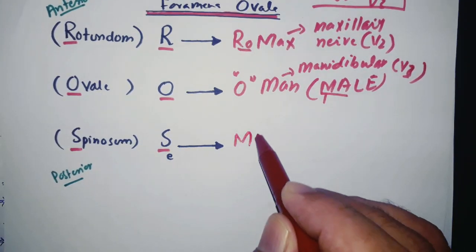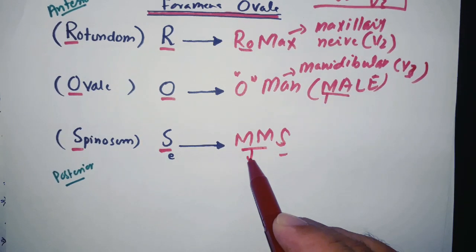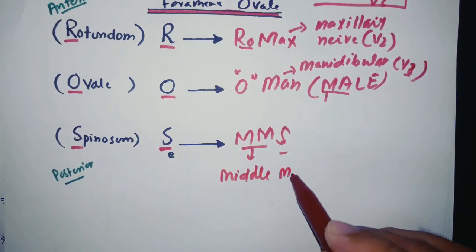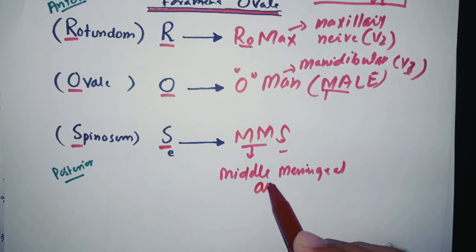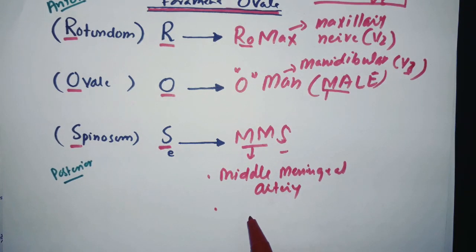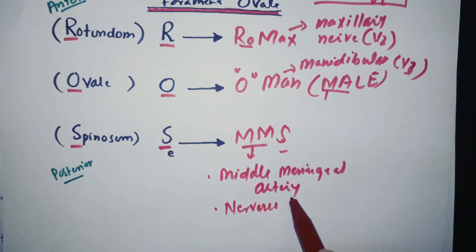For spinosum, just remember MMS. MM is for middle meningeal artery and S is for spinosum. And from this S we can also remember that nervus spinosus also passes through foramen spinosum.